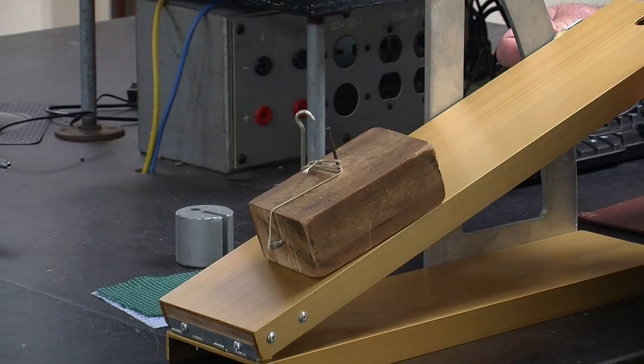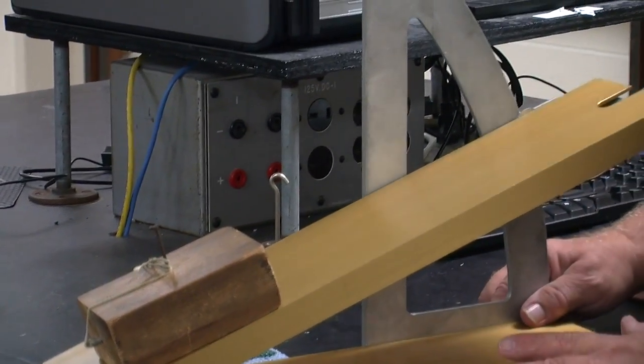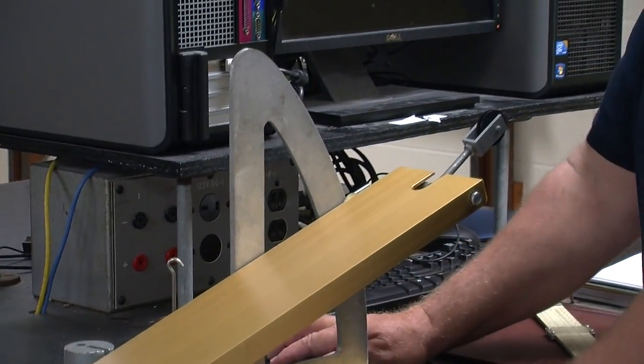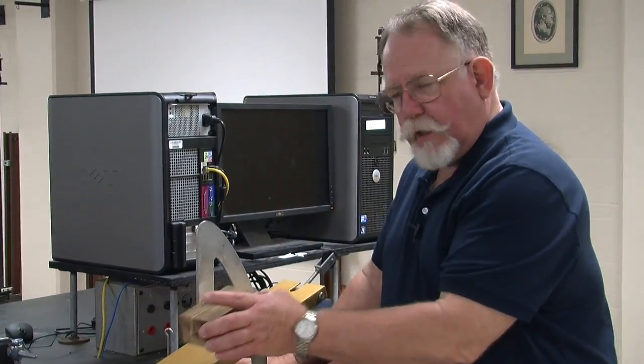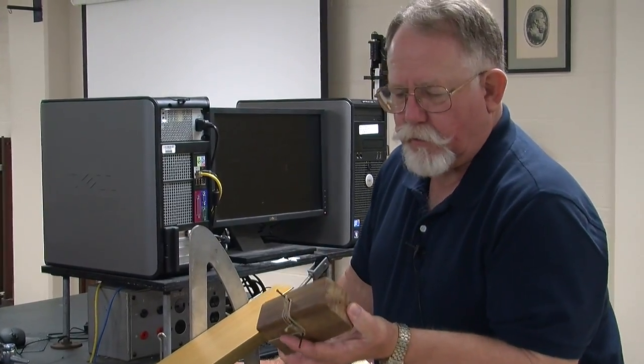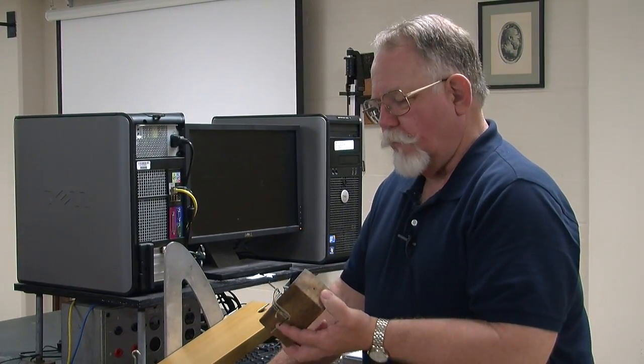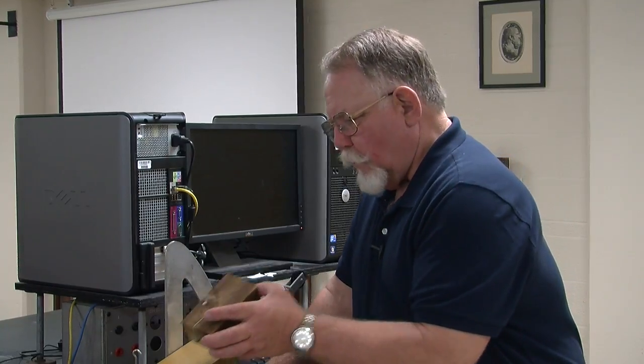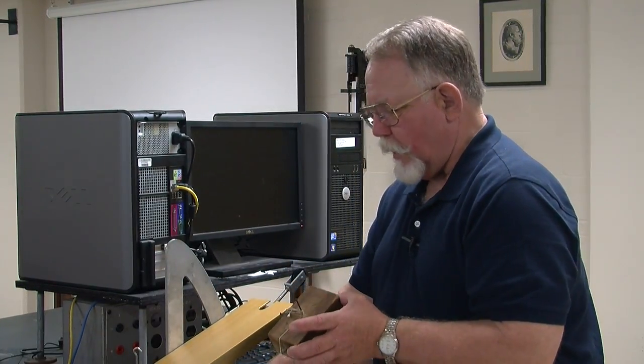Let's say it's accelerating there, so that might be the maximum. And that's at about 19 degrees. So, it appears that for the block sliding in that direction, this did used to be part of a tree, so it's not perfectly uniform in every way, somewhere between 15 and 19 degrees would be a proper angle.